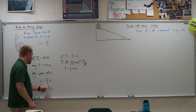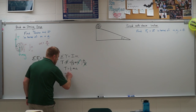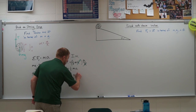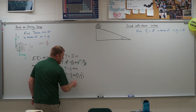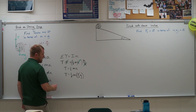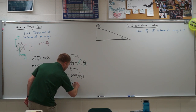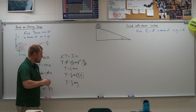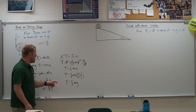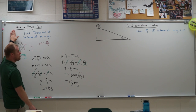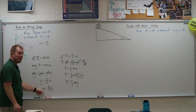Now I plug the acceleration back in to find tension: tension equals one-half times M times two-thirds g. The one-half and the two cancel, leaving tension equal to one-third Mg. So the string is only supporting one-third of the weight, leaving two-thirds of the weight to produce that acceleration.